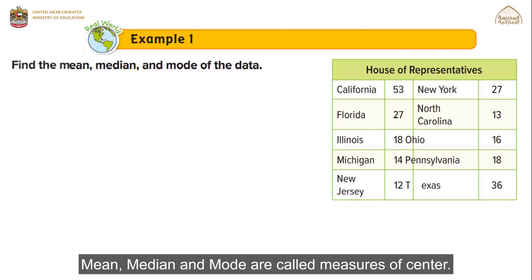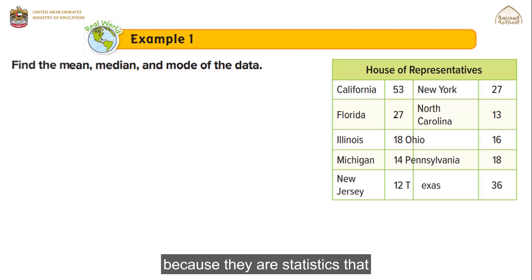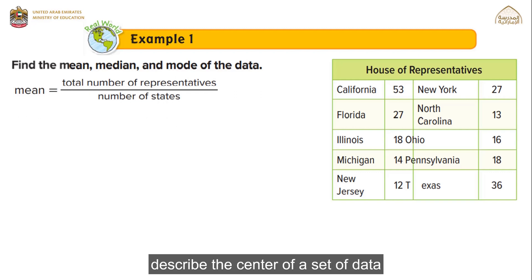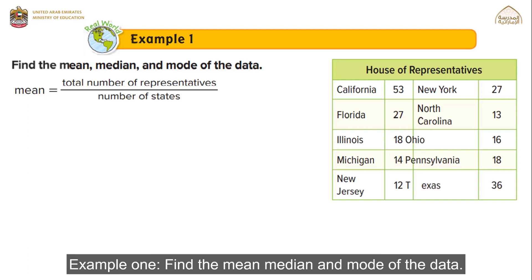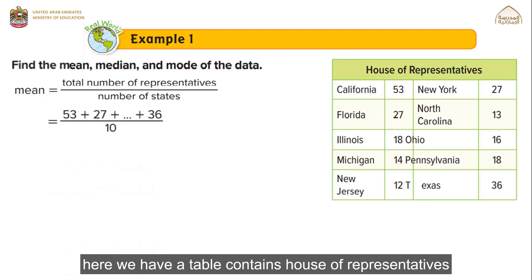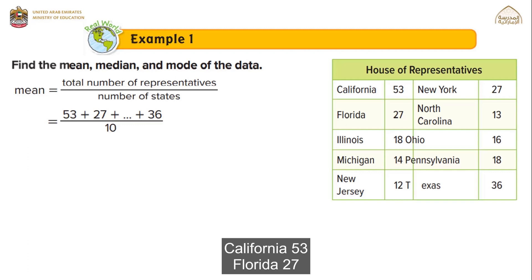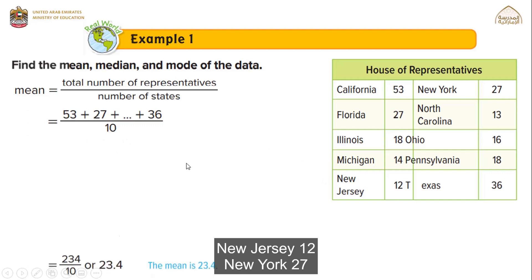To find the mean of this data, we need to add all the values and divide by their number. So the mean is the total number of representatives divided by the number of states. We add 53 plus 27 plus 18 plus 14 plus 12 plus 27 plus 13 plus 16 plus 18 plus 36, and divide by 10 because we have 10 states. Simplifying this expression gives us 23.4 as the mean.